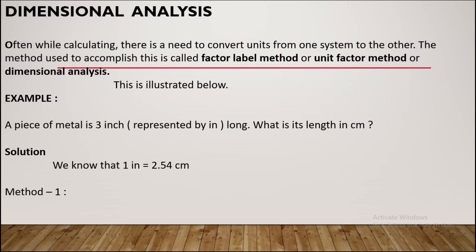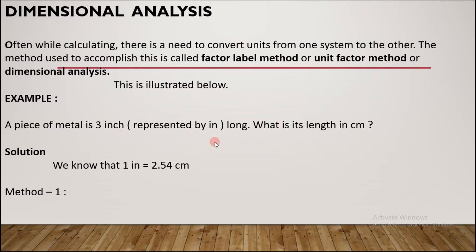Let me tell you one example. The first example: one piece of metal is 3 inches long. We represent its length in inches. So, given that the piece of metal is 3 inches long, what is its length in centimeters? This is called unit conversion.